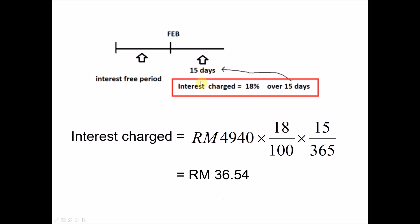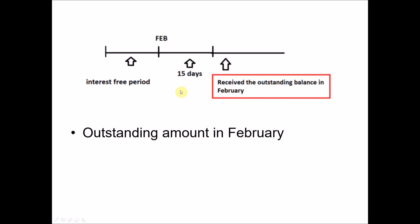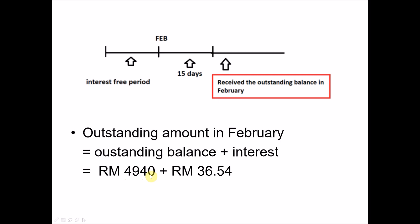The 15 days will be charged at 18% per annum. Using the formula, the interest charge equals the outstanding amount — the balance still owed after the minimum payment — times 18% per annum, times 15/365. So: RM4,940 × 18% × 15/365 = RM36.54. After the 15 days, a new statement is issued. The outstanding balance in February is the remaining balance of RM4,940 plus the interest charge of RM36.54, giving a total of RM4,976.54.